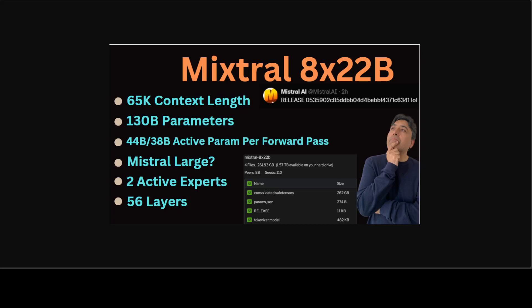We are guessing that this model has either 44 billion or 38 billion active parameters per forward pass. What it means is the number of learnable weights used during each step of input processing in an AI model. A forward pass is when input data is processed through the model's layers to produce an output prediction. During this phase, each layer applies its parameters or weights to transform the input, ultimately generating the final prediction. The number of active parameters used in a forward pass indicates the model's complexity and capacity to process information.